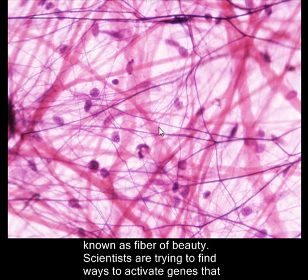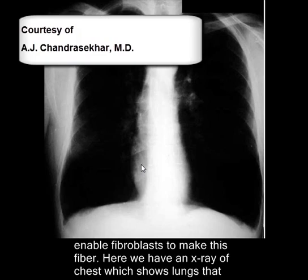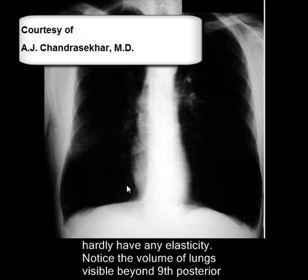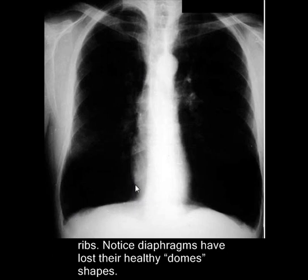Scientists are trying to find ways to reactivate genes that enable fibroblasts to make this fiber. We have a chest X-ray in front of us which shows a pair of lungs that hardly have any elasticity. The lungs are a bit bigger in volume and are just hanging down because of gravity. Notice the volume of the lung is visible beyond the 9th posterior rib, although the posterior ribs are not clearly visible here. The other signs of emphysema are also visible. The diaphragms are somewhat flat, whereas they should be dome-shaped naturally, and the lungs should not be visible beyond the 9th posterior rib.